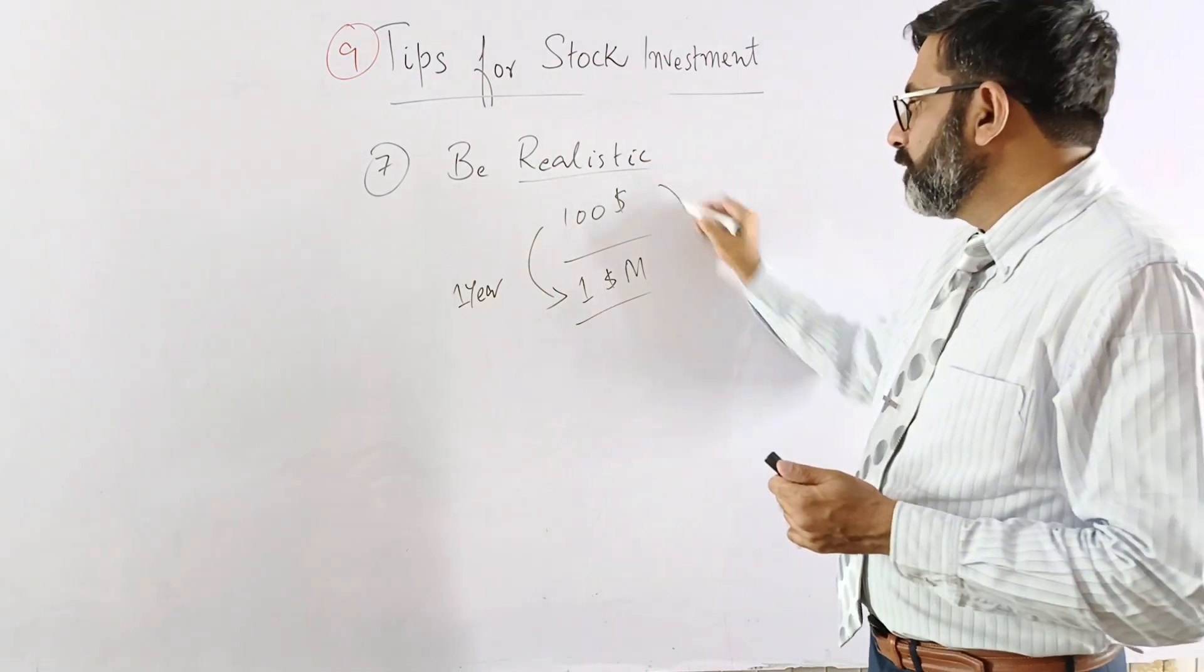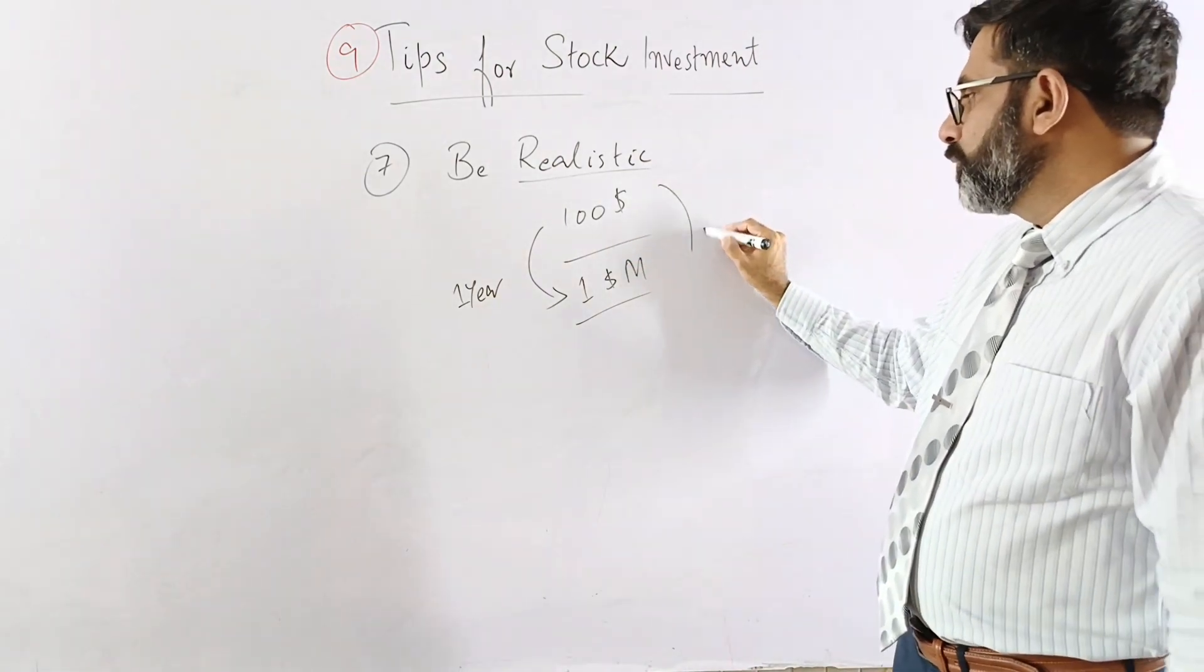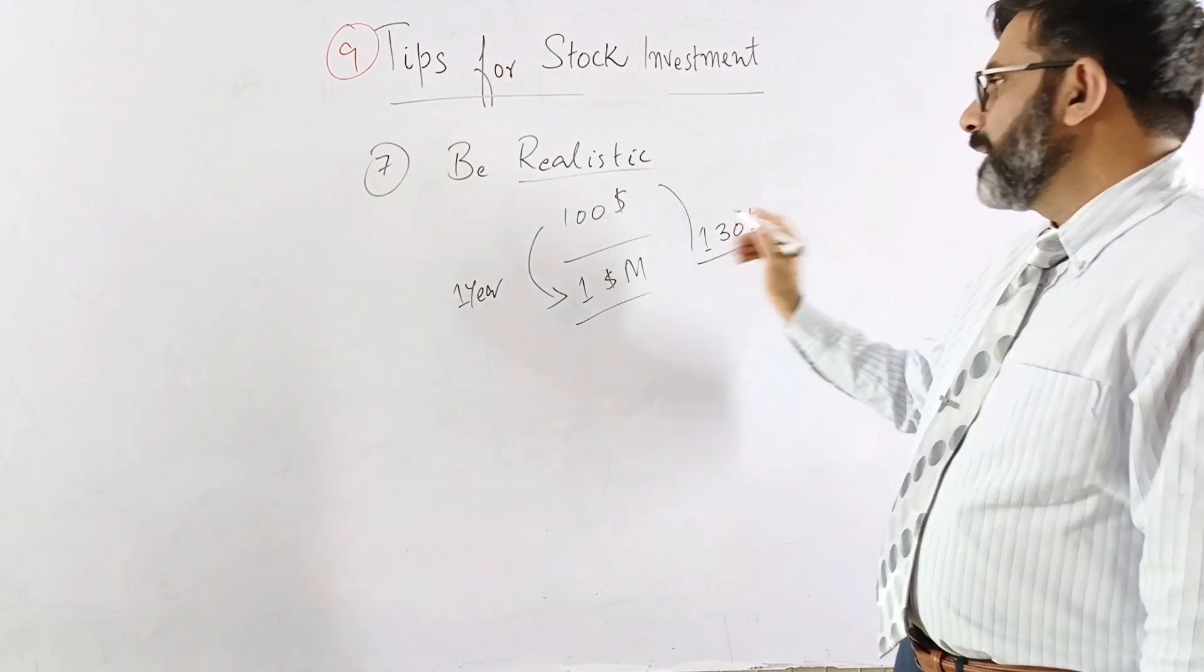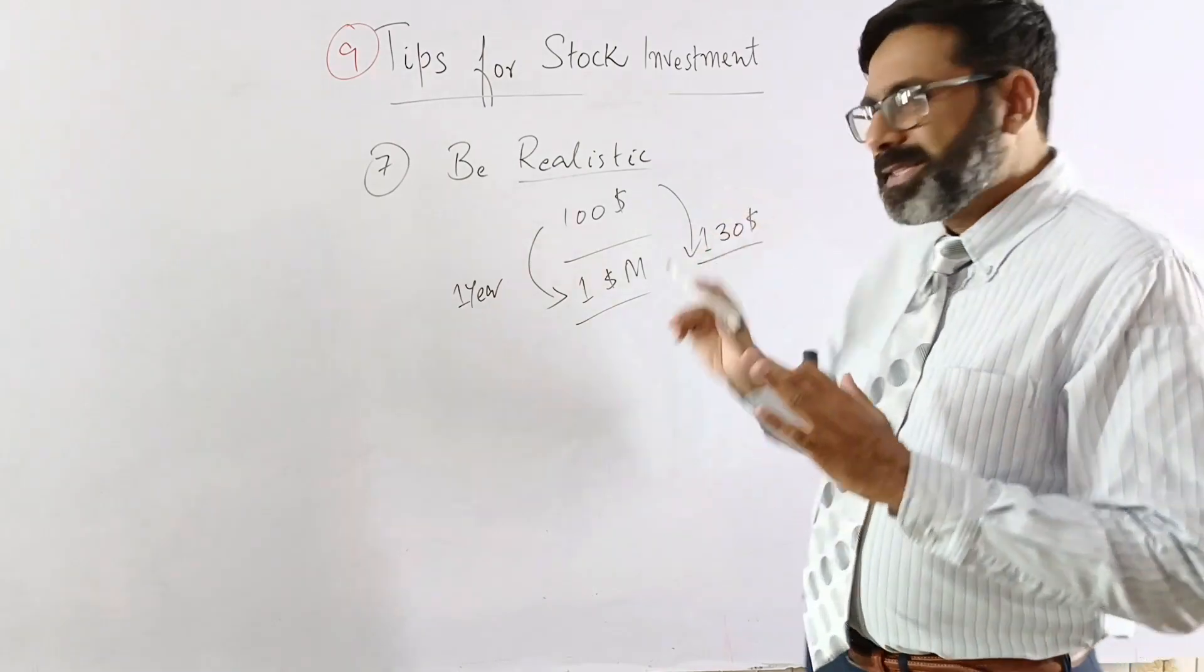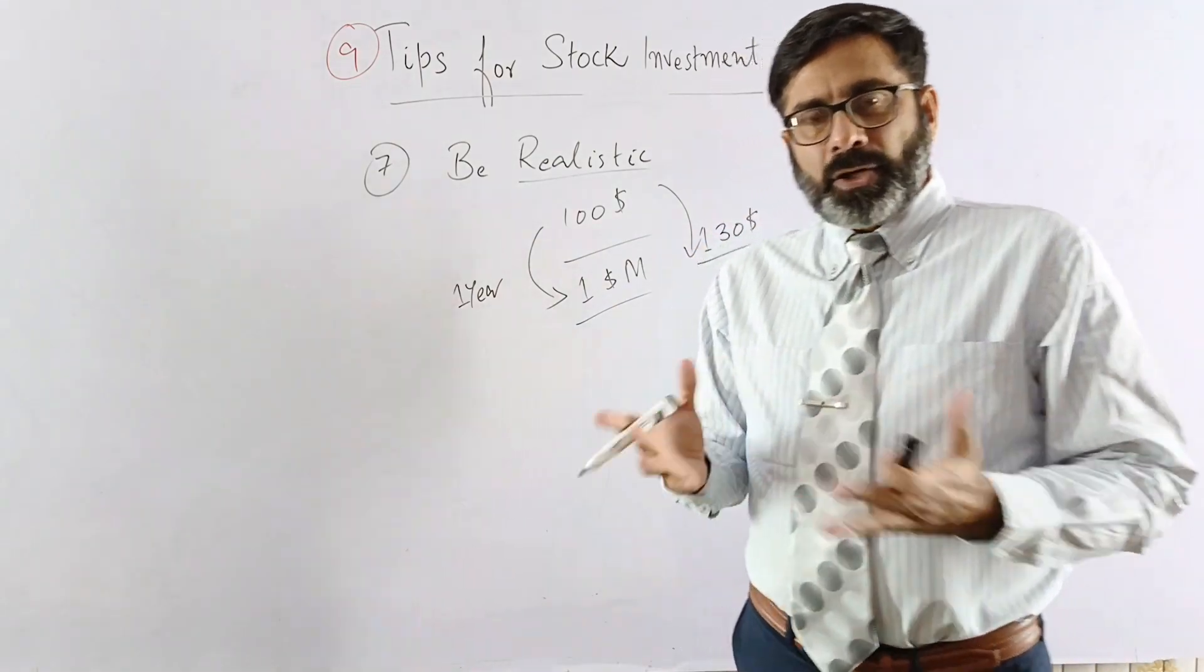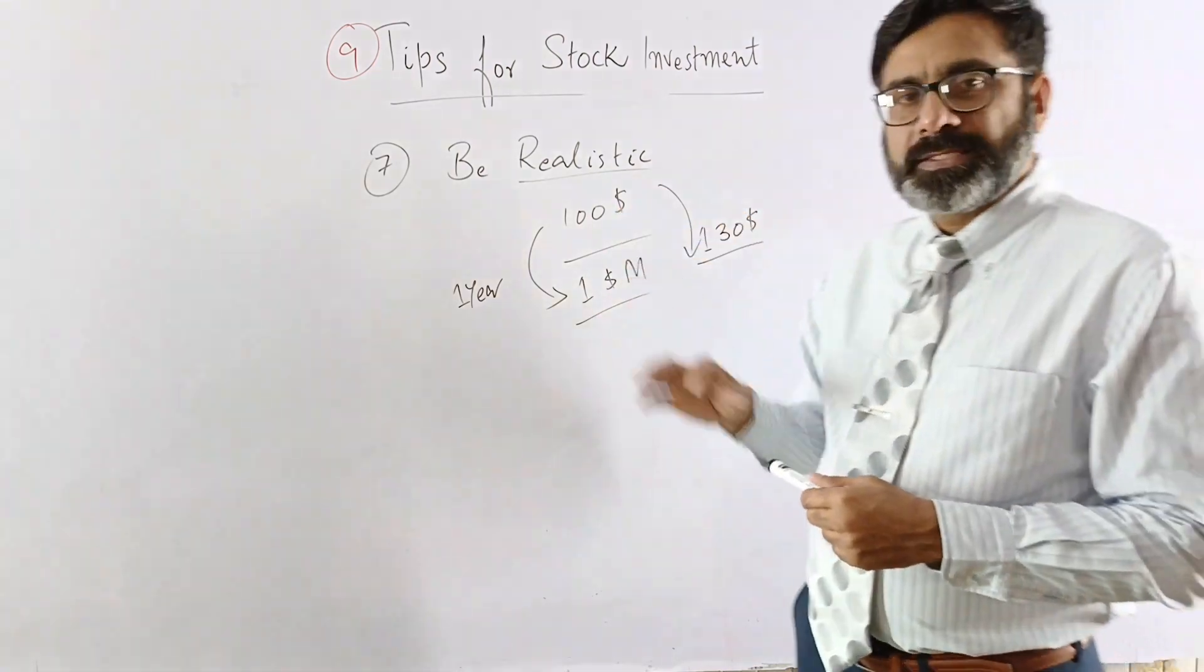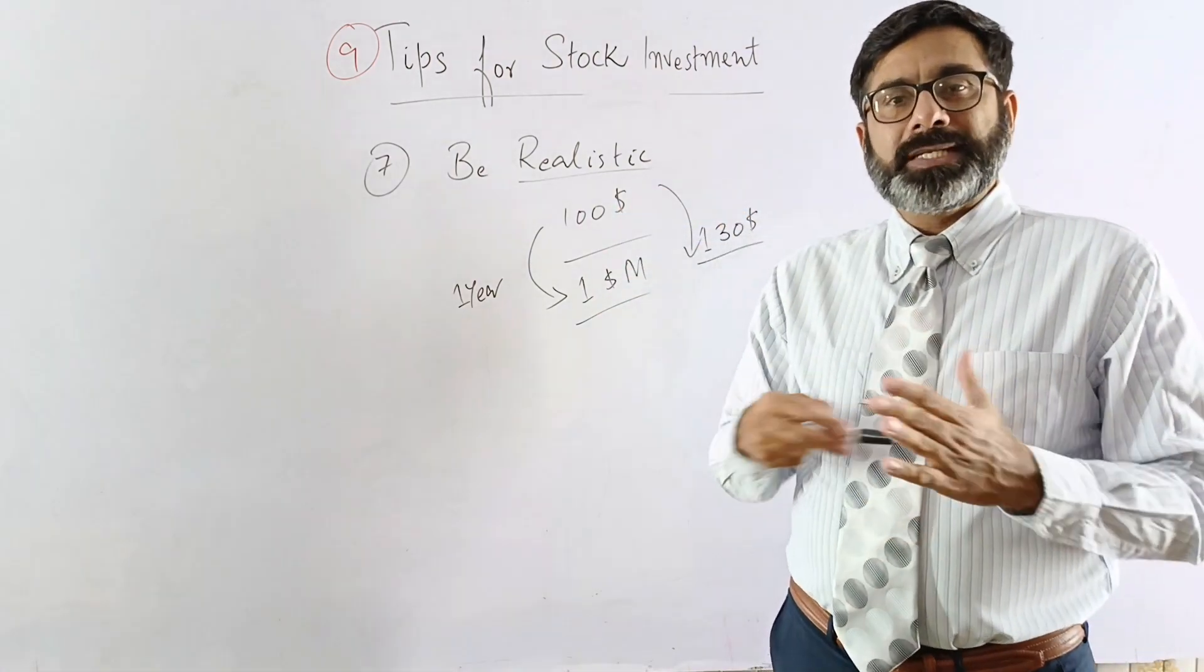But for example, if you are investing this much and you think that after one year you will be able to make $130, that means you want to achieve like a $30 profit from that. Obviously this will be realistic. Now, what happens when you are not realistic? You take so much risk.